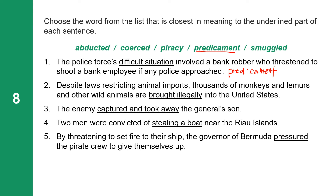Despite laws restricting animal imports, thousands of monkeys, lemurs, and other wild animals are brought illegally into the United States — the answer is smuggled. The enemy captured and took away the general's son — the answer is abducted. Two men were convicted of stealing a boat near the Ryo Islands — the answer is piracy.